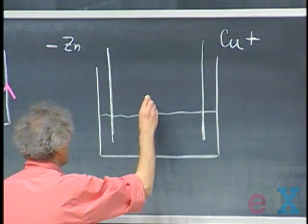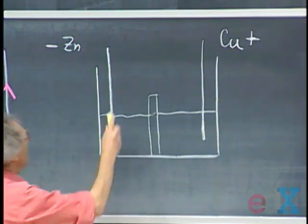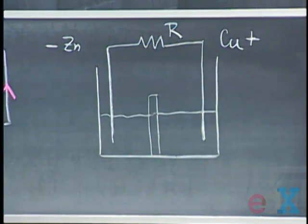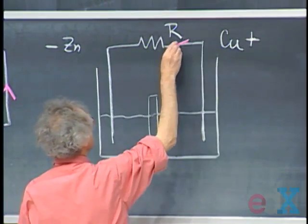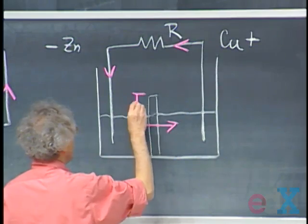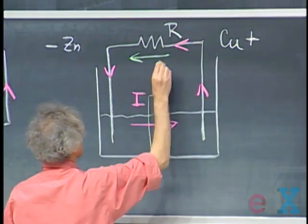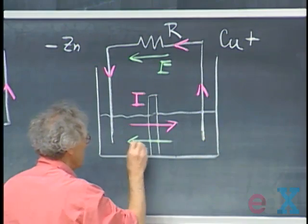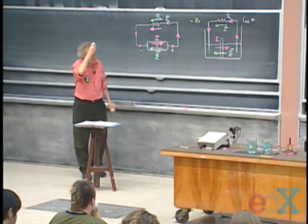We have here a porous barrier that ions can flow freely from one side to the other, and we connect them with a resistor. A current is now flowing in this direction through the resistor, from the plus side of the battery to the minus side. That means inside the battery the current is flowing like this. The electric field here is from plus to minus, and also inside the battery the electric field must be from plus to minus — so the electric field is in the opposite direction of the current.